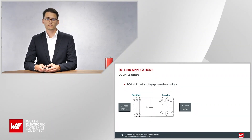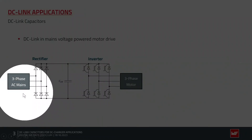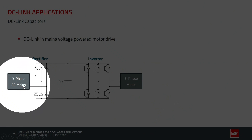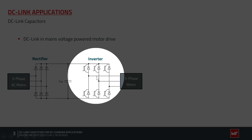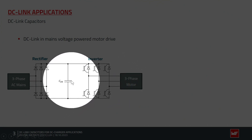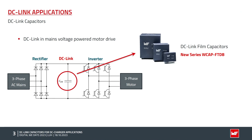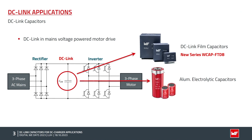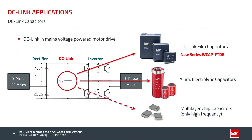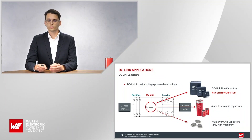Let's start with the DC-Link application in general. From the left-hand side you have the three-phase AC mains, then a rectifier, then an inverter, and on the other side the three-phase motor — with the DC-Link capacitor in between. The question is which technology to use for this capacitor: DC-Link film capacitors, aluminum electrolytic capacitors, or for some applications MLCC, which are more interesting for higher frequencies because smaller capacitance values can be used.